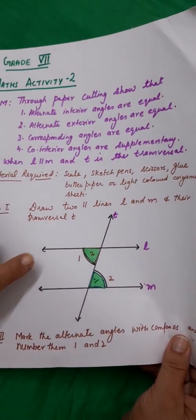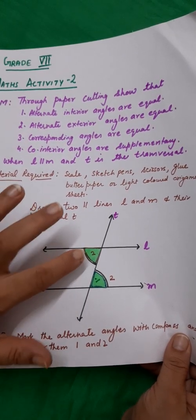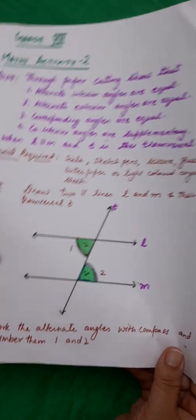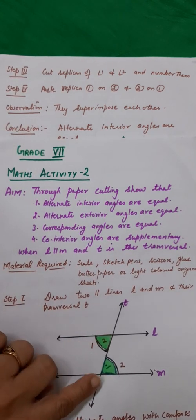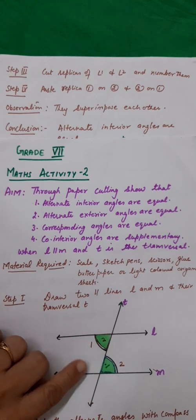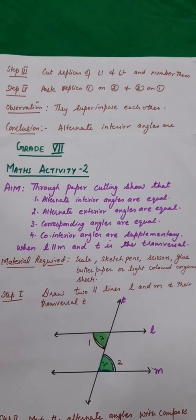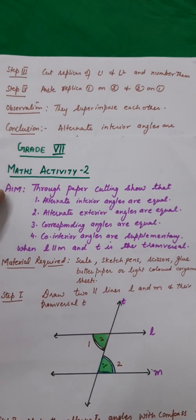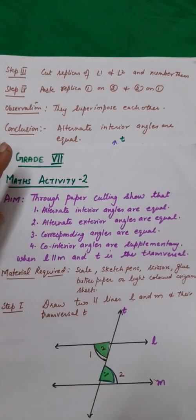To repeat the steps: first draw lines L and M which are parallel, with T as the transversal. Mark angles 1 and 2 with the compass. Cut replicas of 1 and 2. Paste replica of number 1 on number 2 and number 2 on number 1. Observation: they superimpose each other. Conclusion: alternate interior angles are equal.